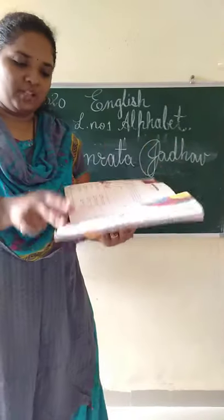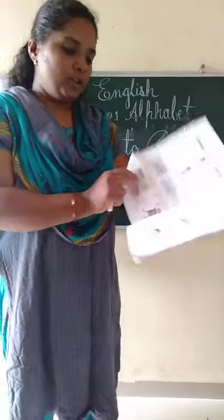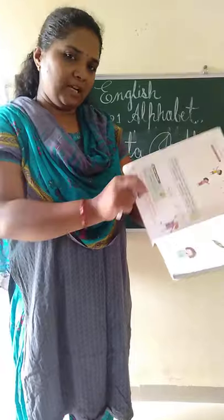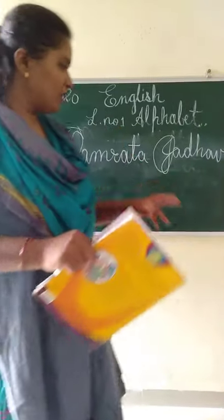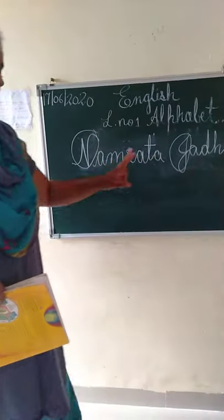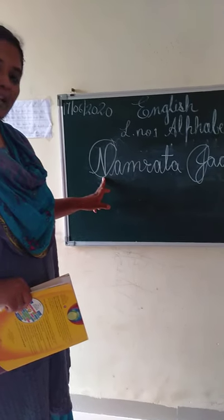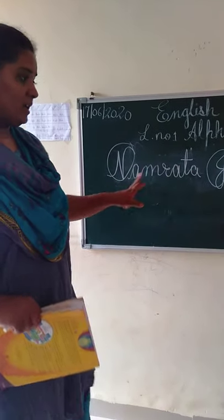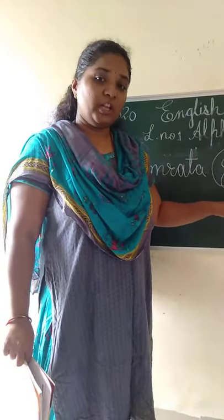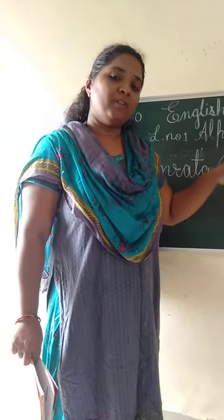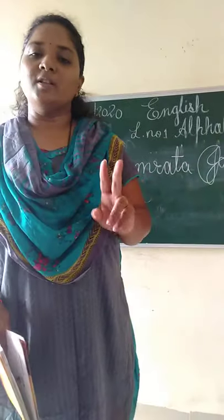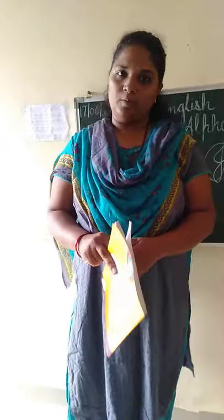On page number 4, it is written: write your name and circle the capital letters. I have written my name Namrata Zadav and circled the capital letters — the first letter N of Namrata and the first letter Z of Zadav are capitalized. You have to do it in the same way in your notebook.